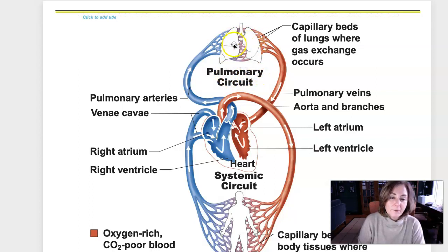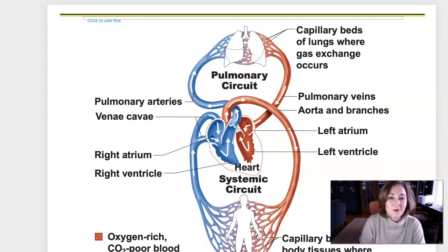And then once the blood is oxygenated, after it flows through the lungs, that oxygenated blood returns to the heart on the left-hand side, the left atrium, left ventricle, and then gets pushed out to the body. So that's a basic overview of the pulmonary circuit and the systemic circuit. Please watch the video. I do a better job explaining it there.